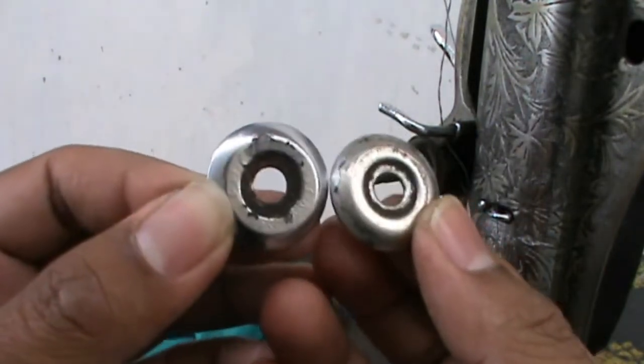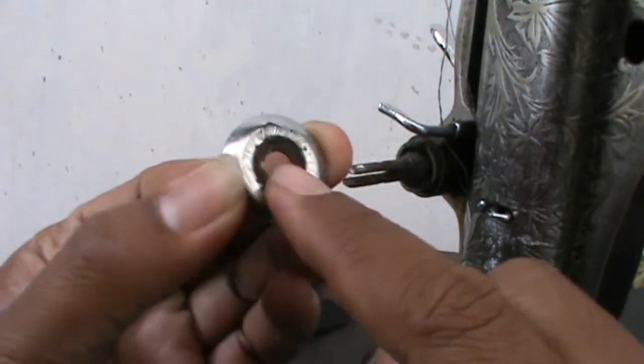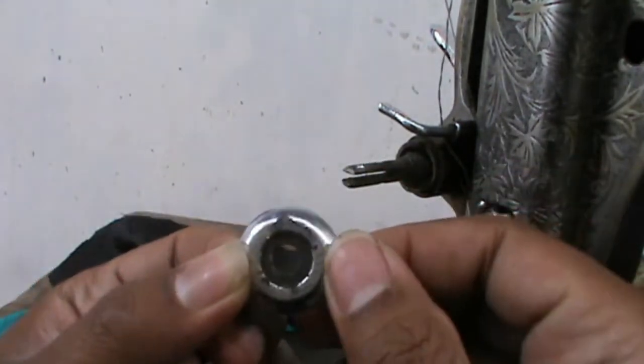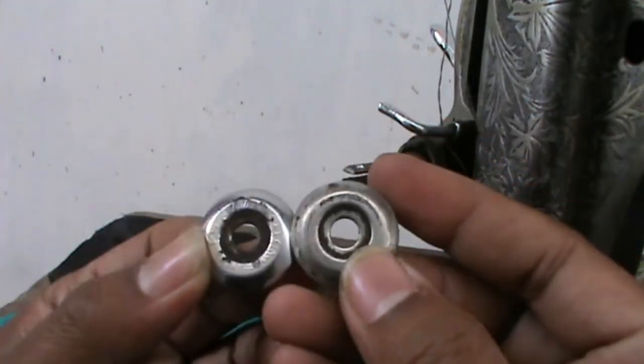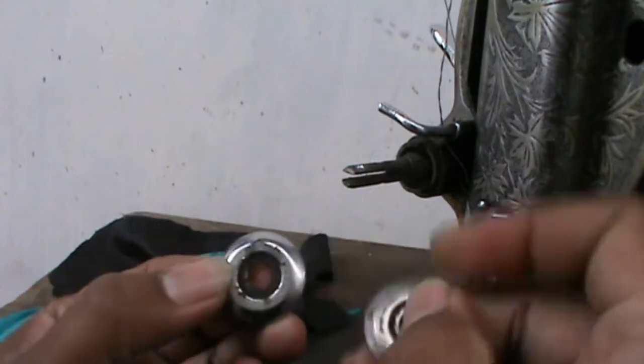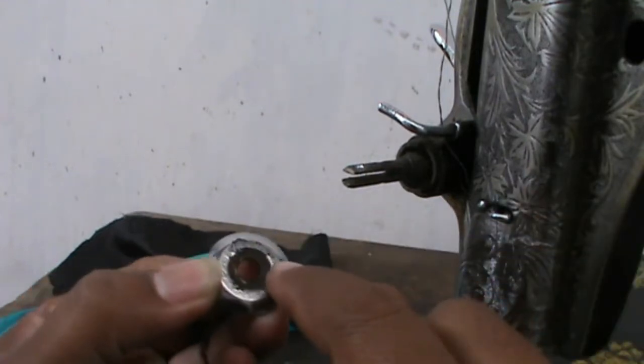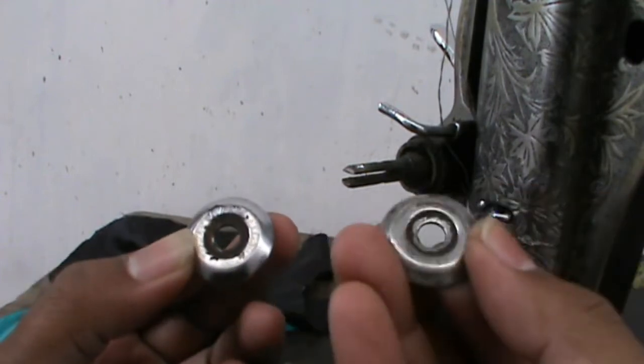Jadi ini yang bermasalah adalah permukaan kecarnya ini kurang rata. Jadi ketika benang ditahan oleh kecar ini kadang berada di antara permukaan yang tidak rata, jadi menjadi tidak stabil hasil jahitannya.